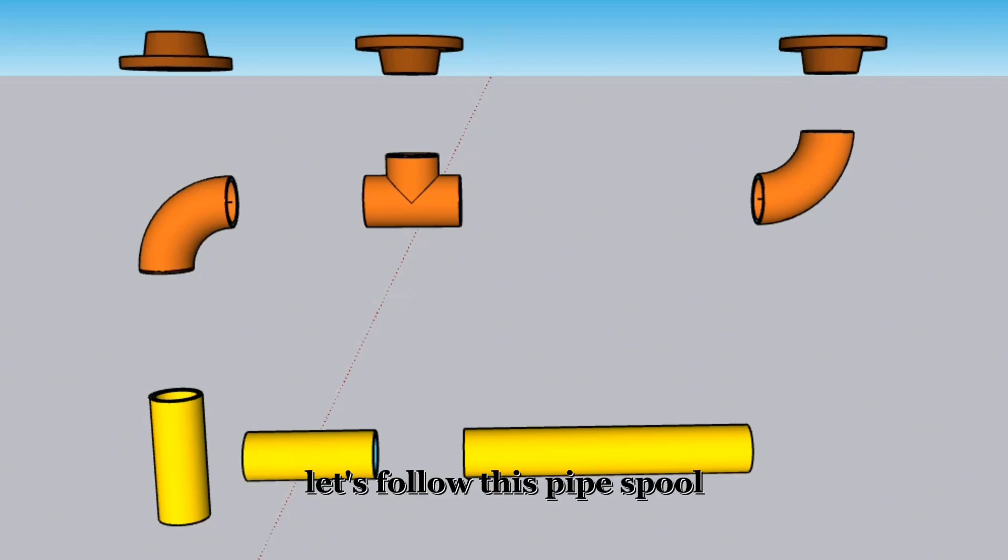Let's follow this pipe spool manufacturing process sequentially. First, let's bring the pipe fittings we will need: 3 pipe pieces, 2 90-degree butt weld elbows, 1 pipe tee, and 3 weld neck flanges.